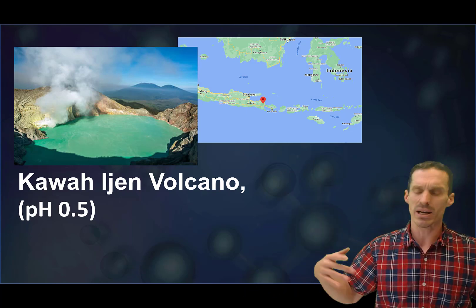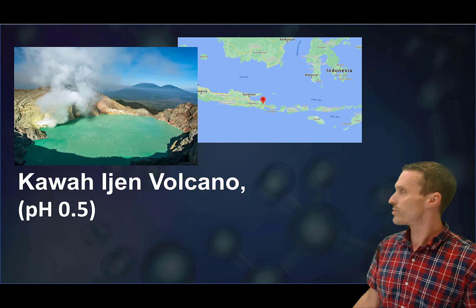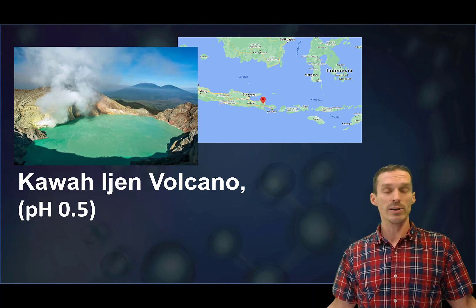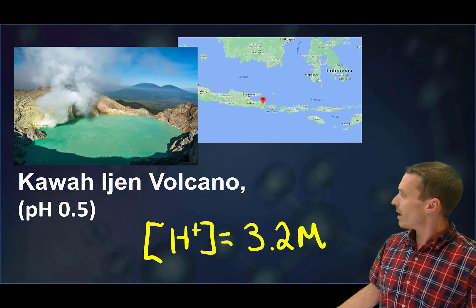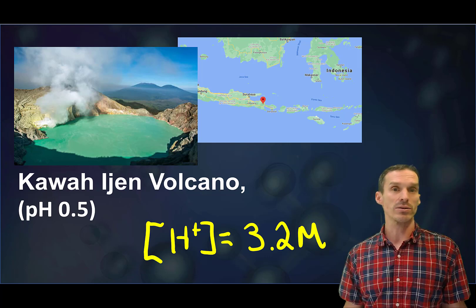Take this example over here, this is like a volcanic mountain lake, so we're talking about sulfur making sulfuric acid. The pH in this lake has been as low as 0.5, which is extremely low. To calculate the equivalent H plus concentration: 3.2 molar, really really concentrated.